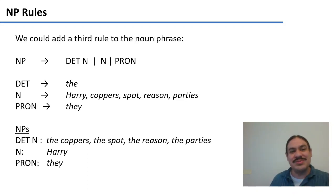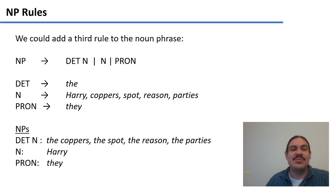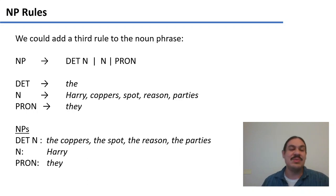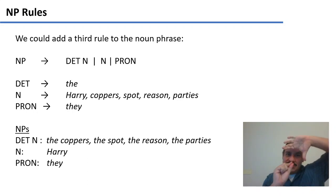Let's add something more to the equation. What if a noun phrase can be three things? It can be a determiner followed by a noun, or just a noun, or a pronoun. We have the same set for the determiner and the same set for noun, but we have a new element, pronoun, which has one element in its set: 'they'. So now we would have three types of noun phrases: determiner plus noun like 'the coppers' or 'the spot', noun phrases that are just a noun like 'Harry', and noun phrases that are just a pronoun like 'they'. All of these are noun phrases — just with different internal structures.